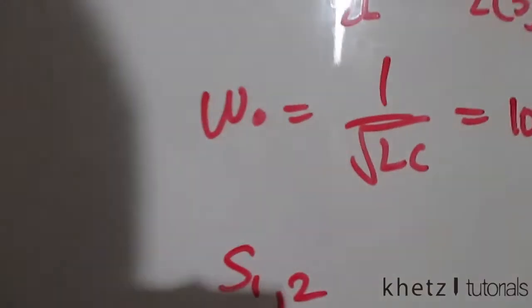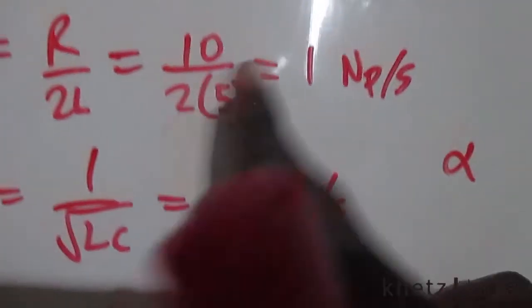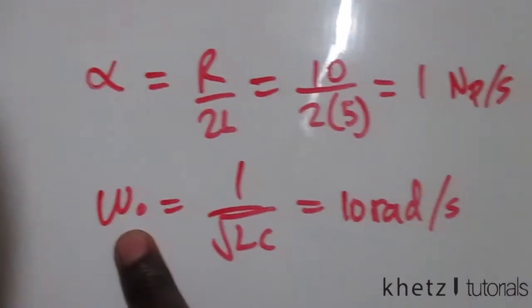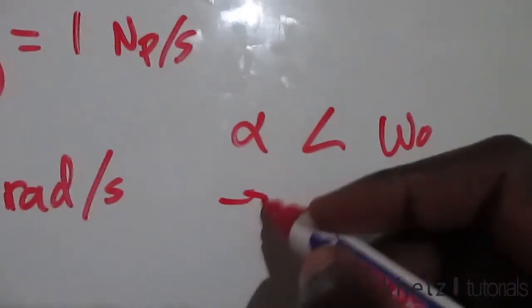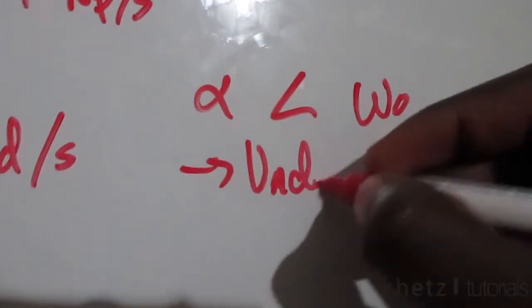The first thing you notice is that the damping factor alpha is less than the resonant frequency omega_o. This leads to an underdamped response.